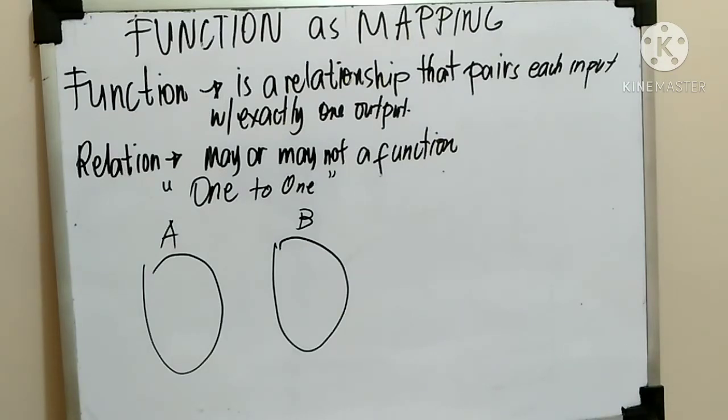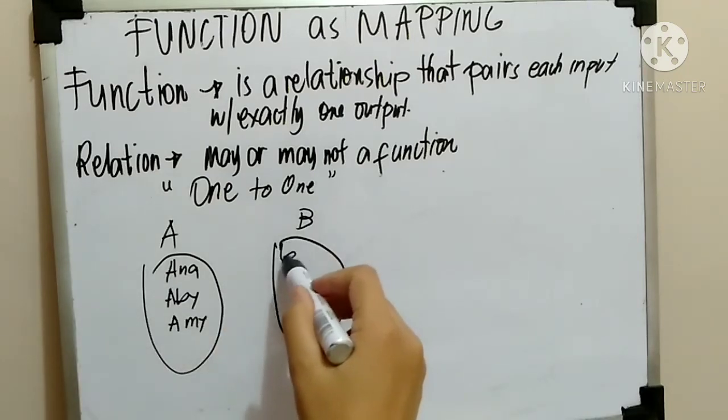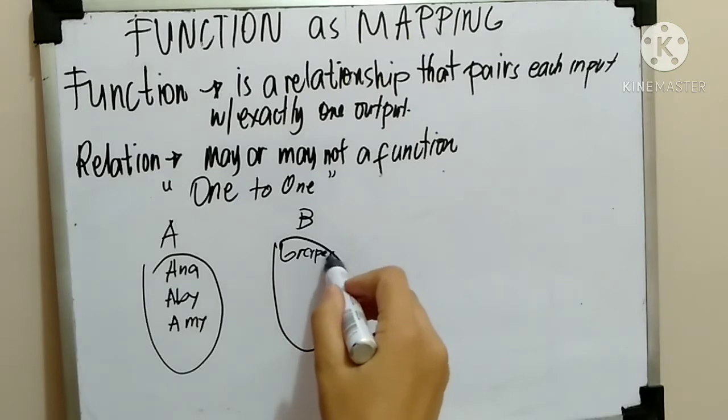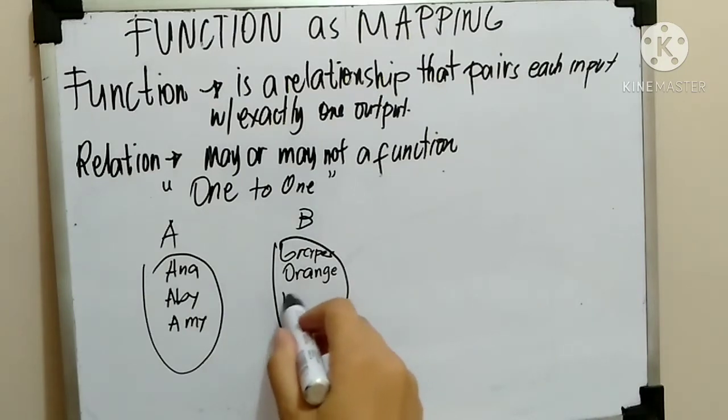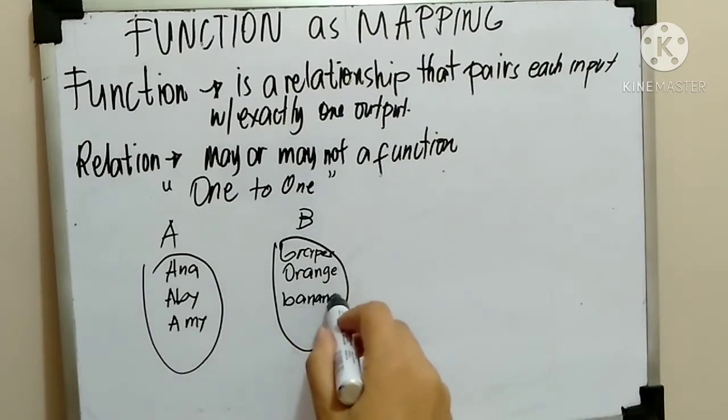So, maglagay ako ng name. For example, Anna, Abby, and Amy. Magiging range natin is, for example, yung mga frutas. For example, grapes, orange, and banana.